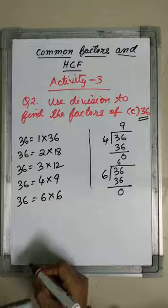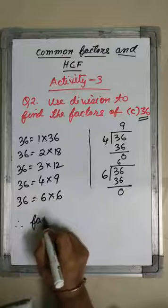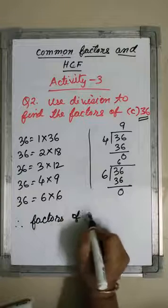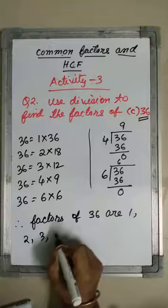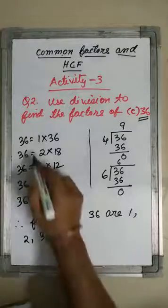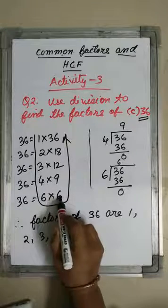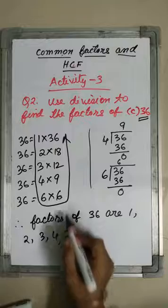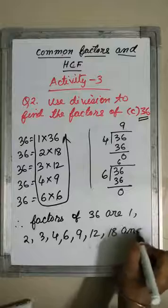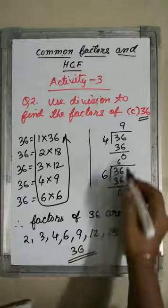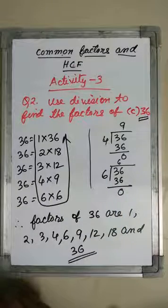So, I have got all the factors of 36. Therefore, factors of 36 are 1, 2, 3, 4, 6, 9, 12, 18, and 36. Using the division method, you have to find the factors of any given number.